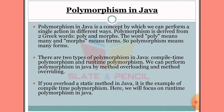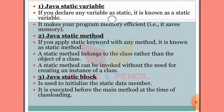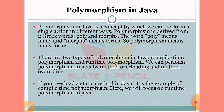We can use compile-time polymorphism with static methods. A static method can be invoked without the need for creating an instance of a class. The main method — public static void main — is an example of a static method used to execute a program.